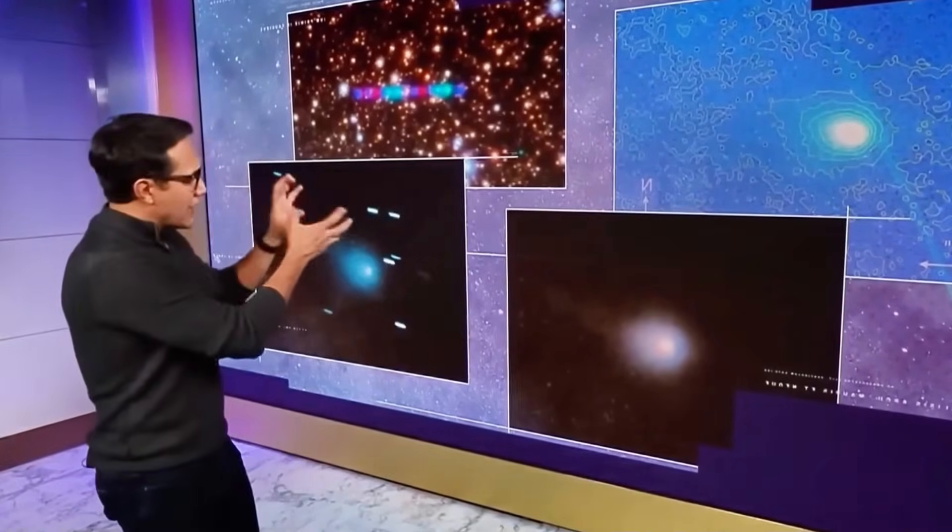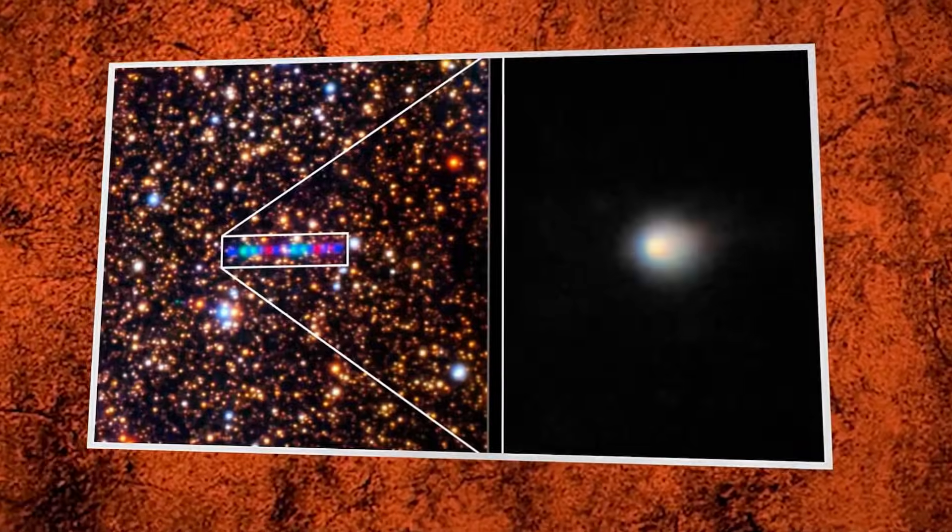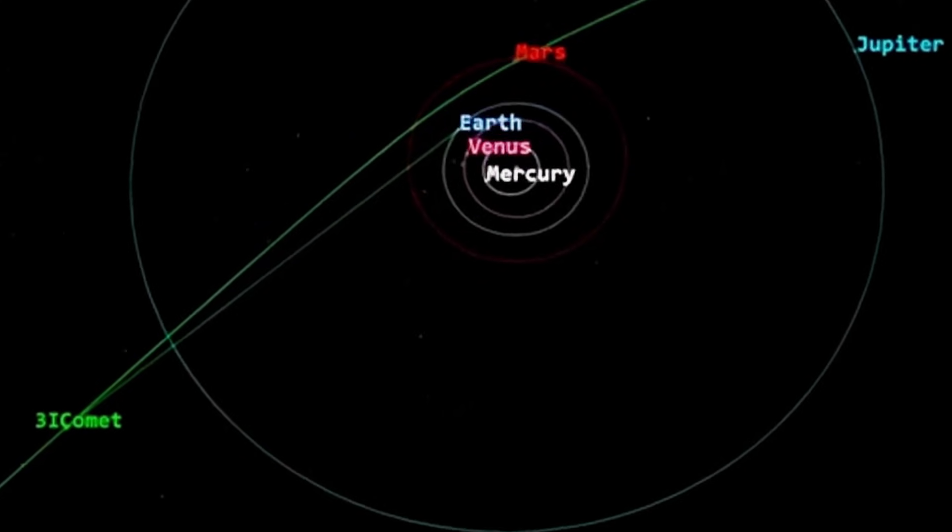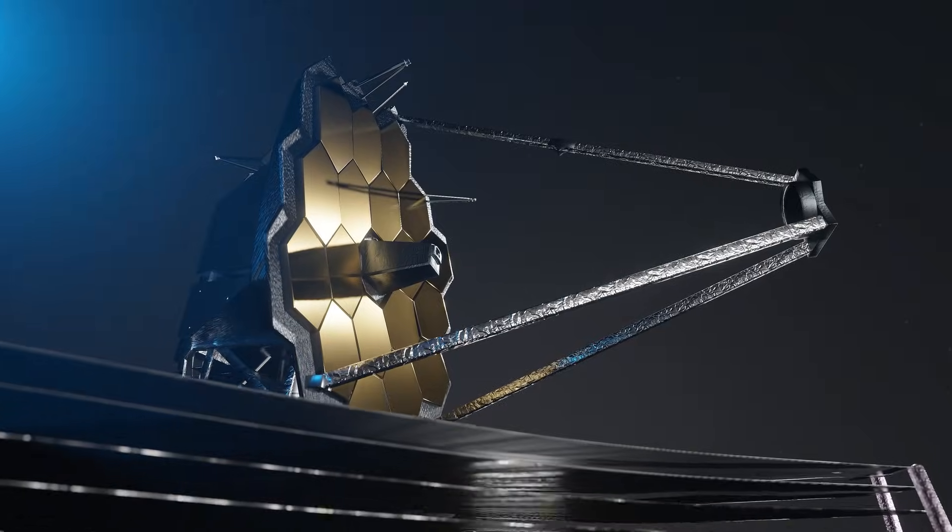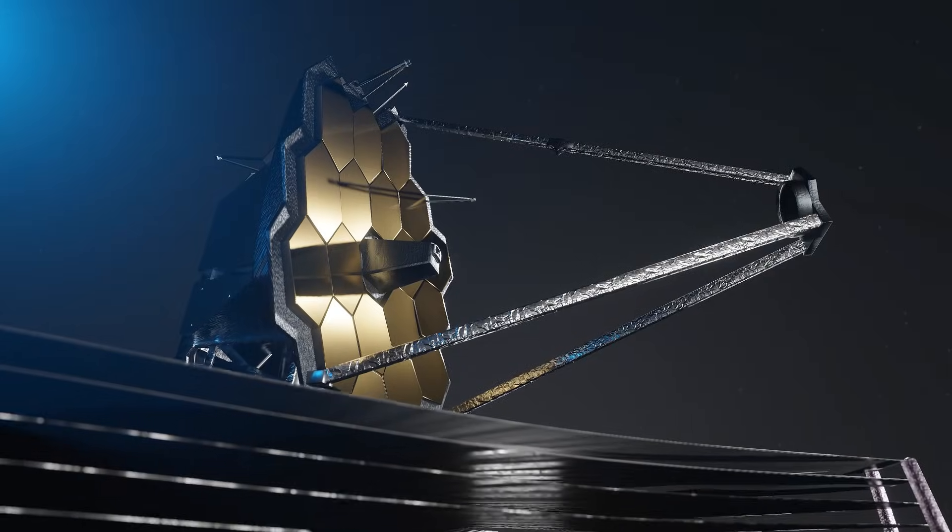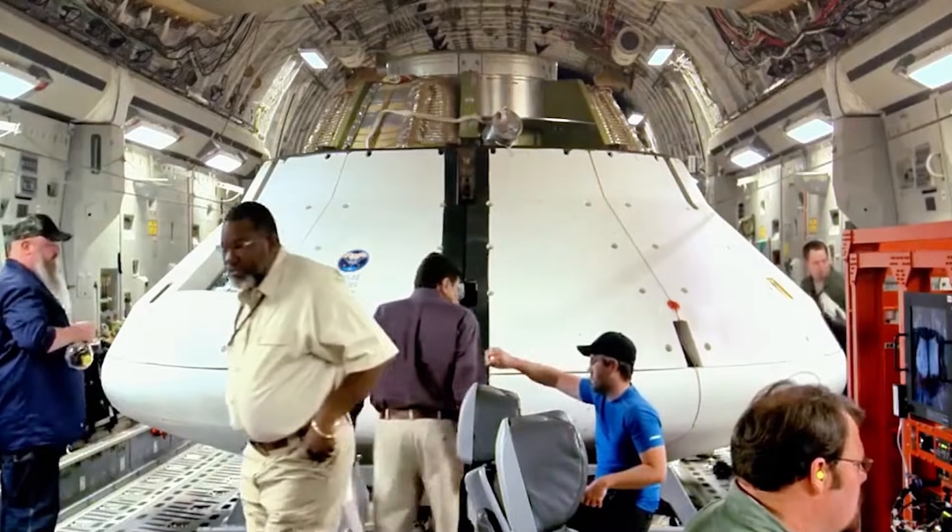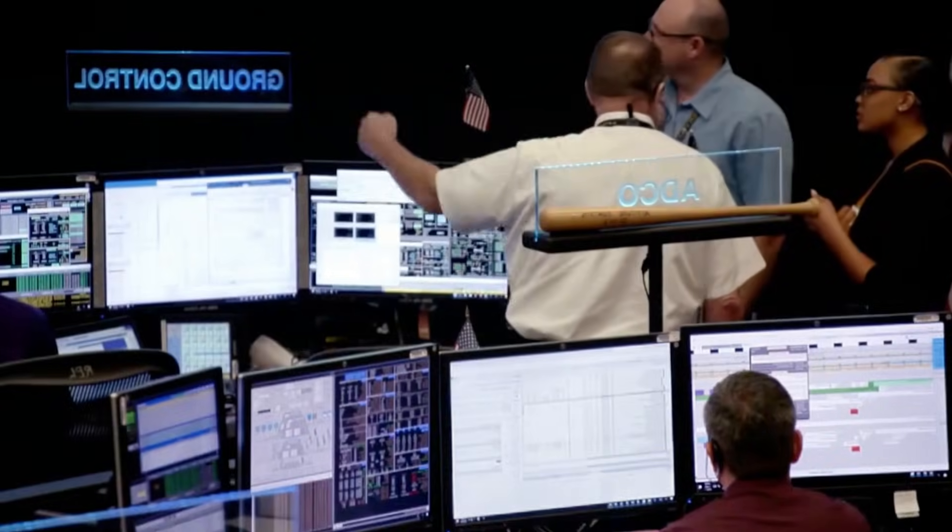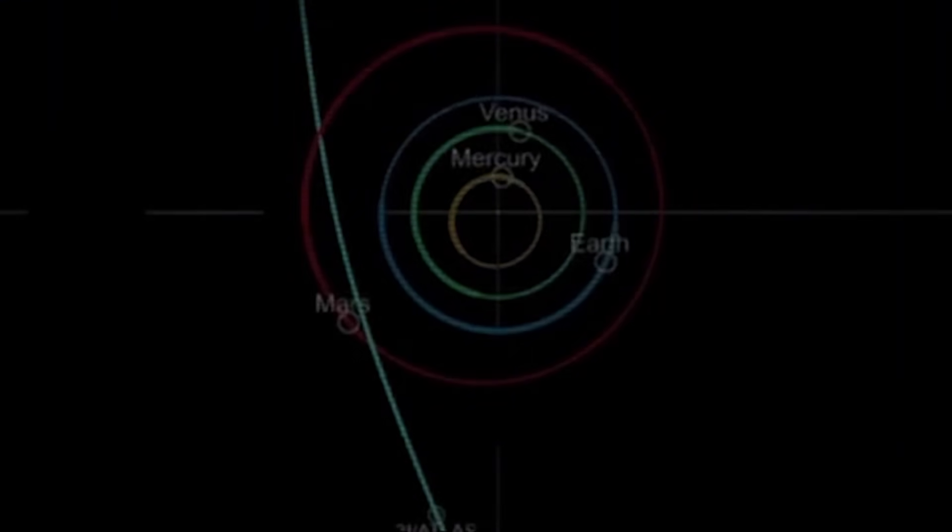After tonight, object fades. Distance increases. Brightness diminishes. Details blur. January shows dimmer object. February dimmer still. March Jupiter encounter provides brief revival. Gravitational focusing. Temporary brightness increase. Then final recession into outer solar system, into interstellar space, into darkness beyond detection.